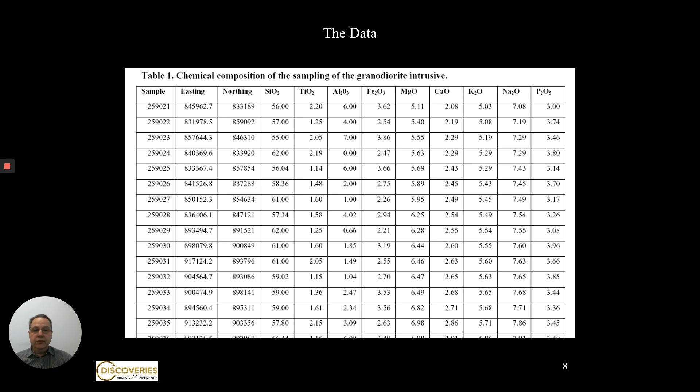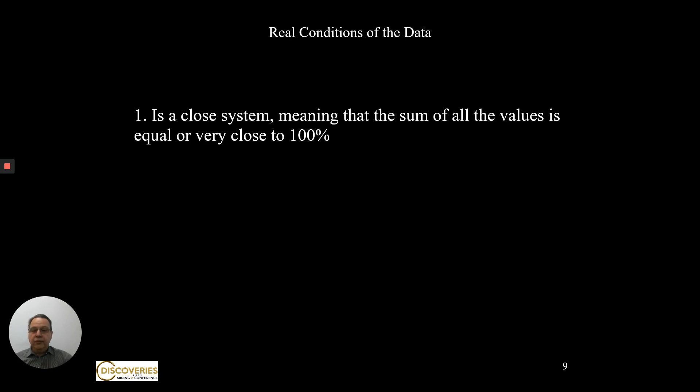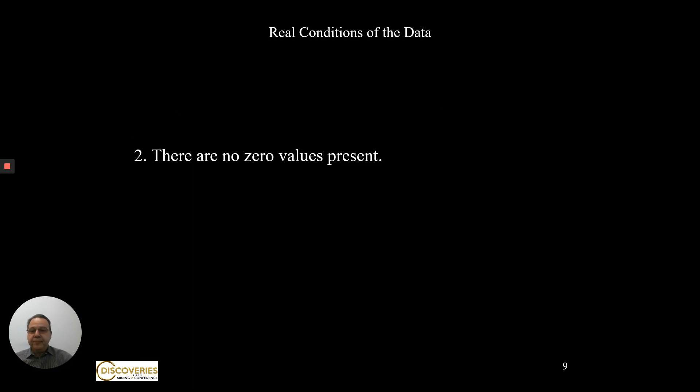It has not only major elements but also trace elements. The initial data had three conditions: first, it was a closed system, meaning that when you sum all the values you get 100% or close to 100%. There are no zero values present or below the detection limit, just to make this simpler.